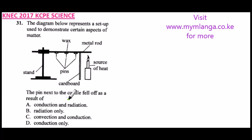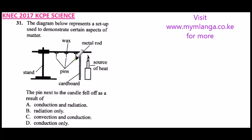We are told the pin next to the candle fell off — as a result of what? Looking at the experiment, we have the source of heat which will heat the metal rod. Heat will be transferred along the metal rod, and because the first wax is nearest, that pin will fall first. So the experiment is about heat transfer.